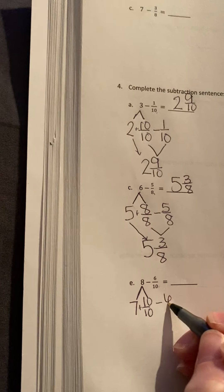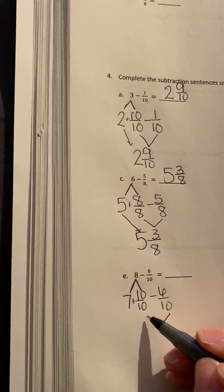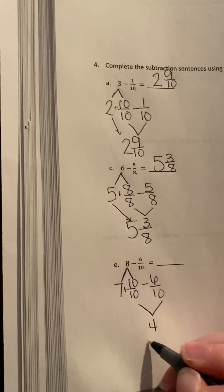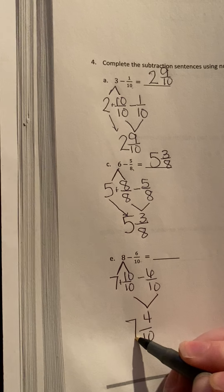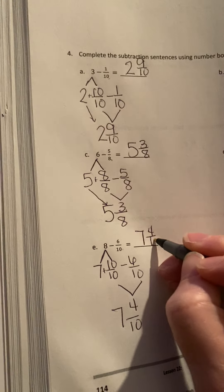Then I can subtract my 6 tenths. So I'm going to do my fractions first. I have 10 tenths minus 6 tenths. Well, 10 minus 6 is 4. My denominator stays the same. And then I just bring the 7 down. So my answer is 7 and 4 tenths.